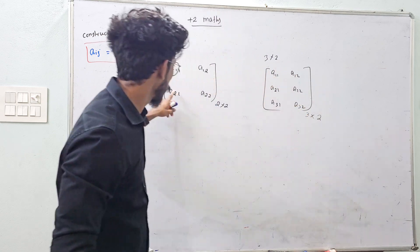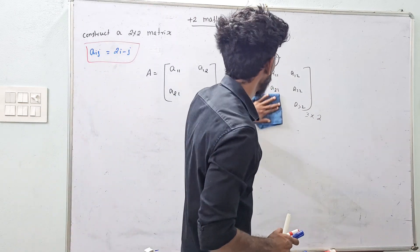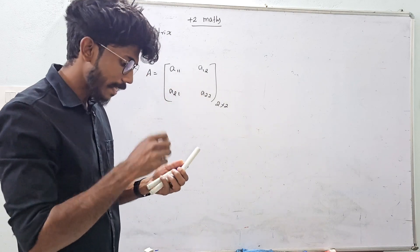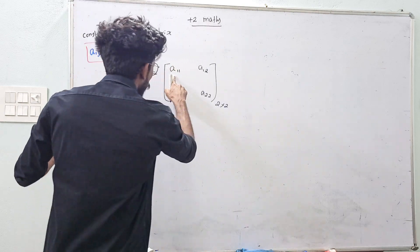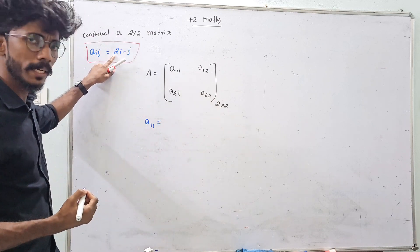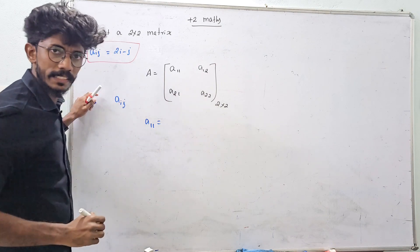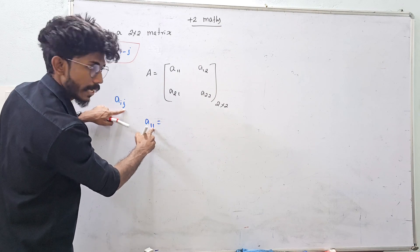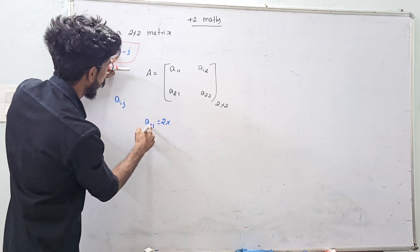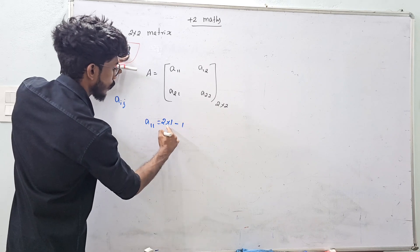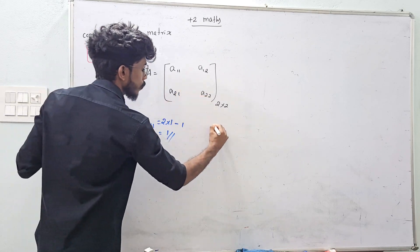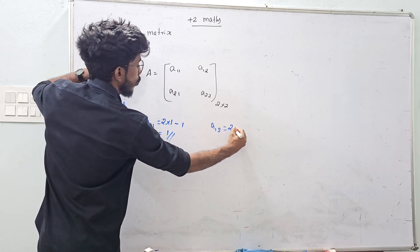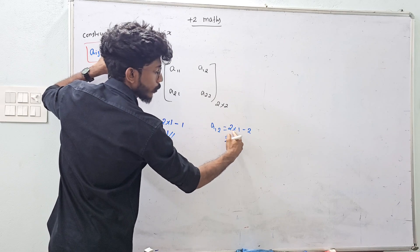For a 2x2 matrix using aij = 2i minus j: A(1,1) = 2(1) minus 1 = 1. A(1,2) = 2(1) minus 2 = 0. Then computing further elements — 2 minus 2 is equal to 0.